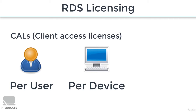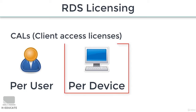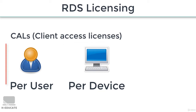You choose your licensing according to your network needs and architecture. For example, if you have only 3 or 5 devices and 10 to 20 users that use those devices to connect to your server, then you go with per-device. Or if you have many devices but a limited number of users, then you can go with a per-user license.